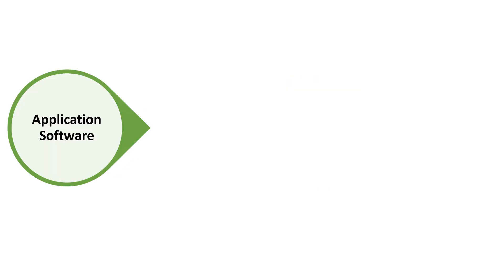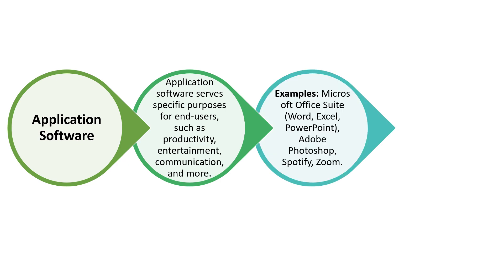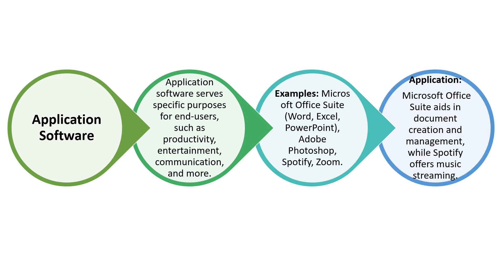The next type of computer software is application software. We are first seeing the general types, then we will dive deeper into other specific types. Application software serves specific purposes for end users such as productivity, entertainment, communication, and more. Examples are Microsoft Office Suite — which includes Word, Excel, and PowerPoint — Adobe Photoshop, Spotify, Zoom, etc. Microsoft Office Suite aids in document creation and management, while Spotify offers music streaming.